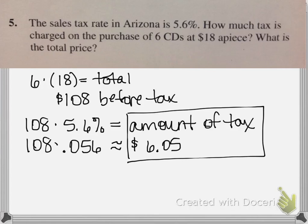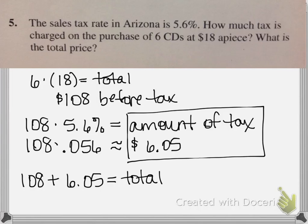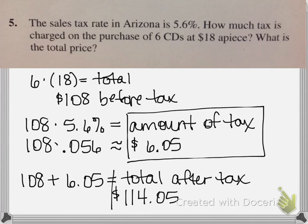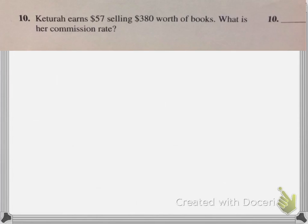To find the total, I take the purchase price of $108 and add the sales tax of $6.05. So $108 plus $6.05 equals $114.05 — that is the total price after tax, or including tax. We've now answered both questions: how much tax is $6.05, and the total price is $114.05.